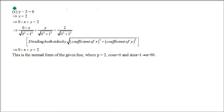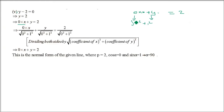For y - 2 = 0: there is no x term, so we write it as 0·x + y = 2. Coefficient of x is 0 and coefficient of y is 1. 0² + 1² = 1, √1 = 1. Equating with x cos α + y sin α = p: cos α = 0 and sin α = 1, which means α = 90°. And p = 2.